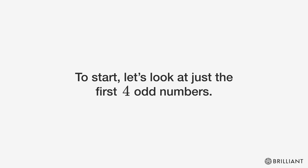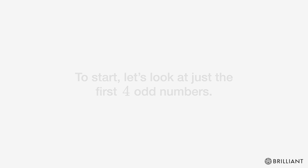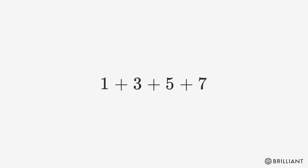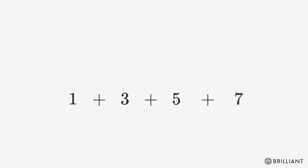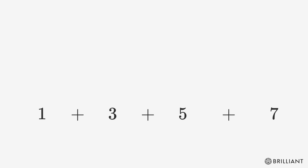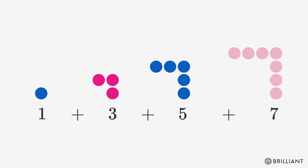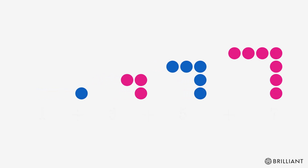To start, let's look at just the first four odd numbers: 1, 3, 5, and 7. If we visually represent them, we can see a useful pattern.